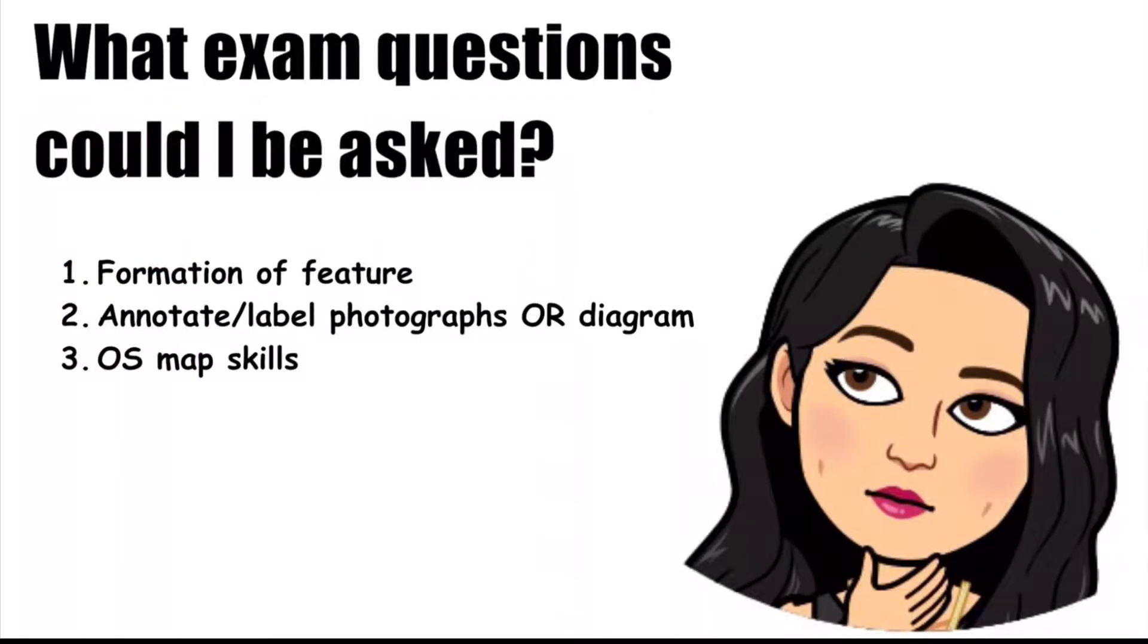With regards to coastal landforms, we need to be thinking about what types of exam questions we could be asked. Examiners for this type of content will be looking for you potentially to explain the formation of a feature, in this case a cave, an arch, a stack and a stump. They might ask you to annotate or label a photograph or diagram they provide you. Alternatively, they could give you an OS map showing this particular coastal landscape and could ask you to give grid references, measurements using scale, or just to identify on the OS map where this particular coastal feature is.